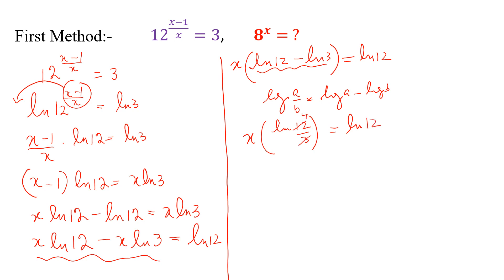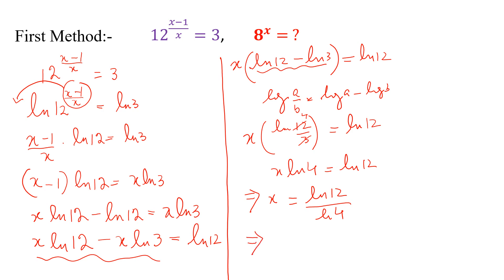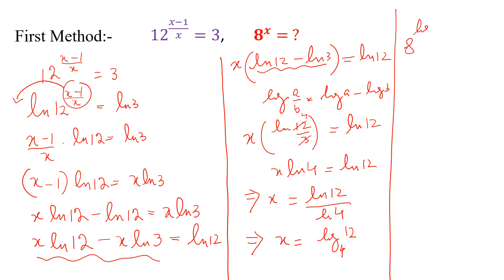Simplifying further, x natural log of 4 is equal to natural log of 12, so x is equal to natural log of 12 divided by natural log of 4. By the log change-of-base property, x is equal to log with base 4 of 12. Therefore, 8 to the power x is equal to 8 to the power log with base 4 of 12.